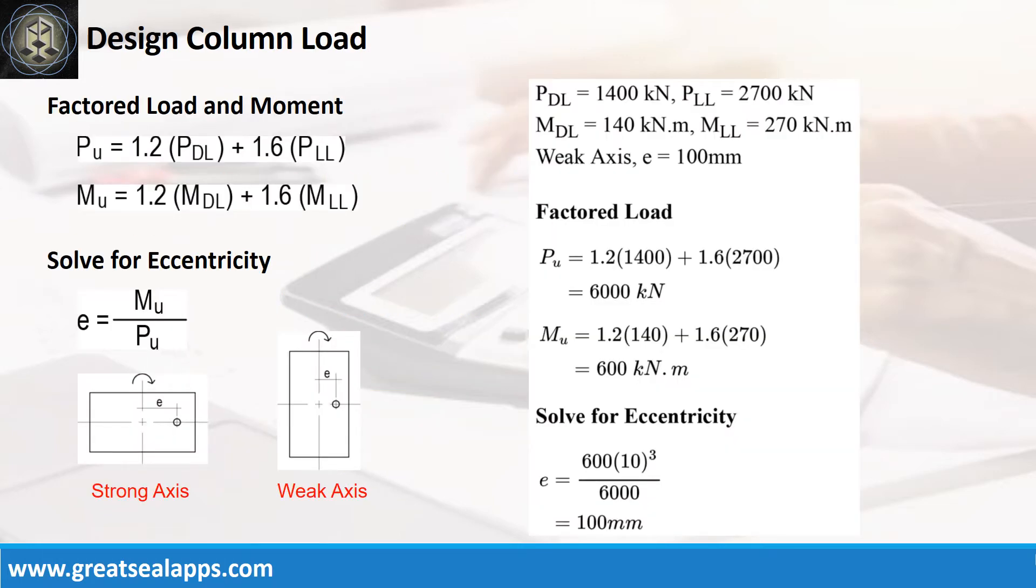Given axial dead load equals 1,400 kN and axial live load equals 2,700 kN, the factored axial load is 6,000 kN. Given moment dead load equals 140 kNm and moment live load equals 270 kNm, the factored moment is 600 kNm for an eccentricity of 100 mm at weak axis.